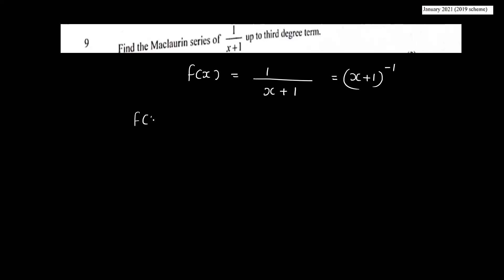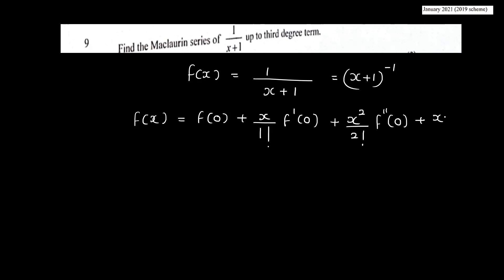Find the Maclaurin series of 1/(x+1) up to the third-degree term. We have F(x) equals 1/(x+1). The Maclaurin series expansion is: F(0) plus x over 1 factorial into F'(0) plus x squared over 2 factorial into F''(0) plus x cubed over 3 factorial into F'''(0).